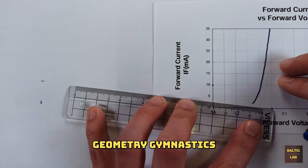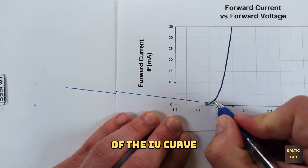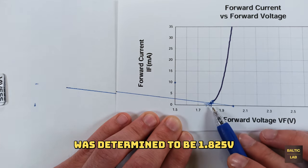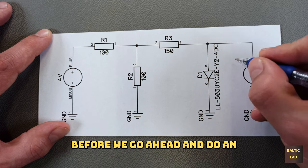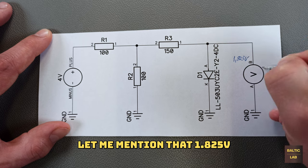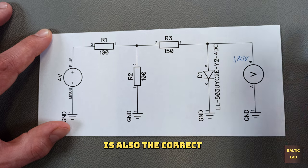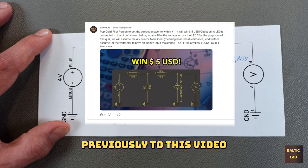Unfortunately the graph doesn't extend that far but that is nothing that's going to stop a determined engineer. So after some geometry gymnastics and exponential interpolation of the IV curve the operating point was determined to be 1.825 volts. Before we go ahead and do an in-circuit verification of this prediction let me mention that 1.825 volts is also the correct answer for the quiz that I posted previously to this video.